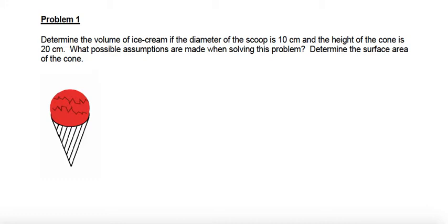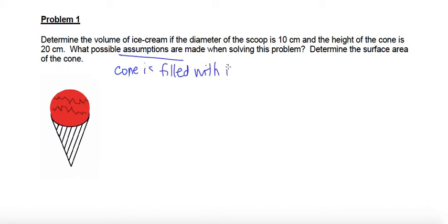As mathematicians, we need to take some liberties when solving questions like this. For example, we're going to assume that the entire cone is filled with ice cream. So the possible assumptions are: the cone is filled with ice cream, and the scoop on top is a semi, or half a sphere.